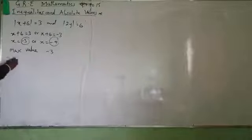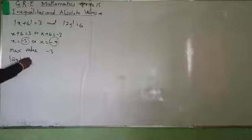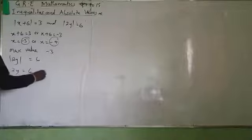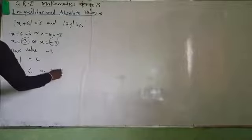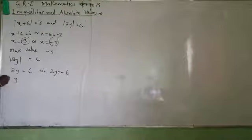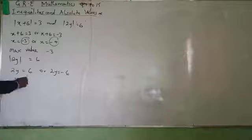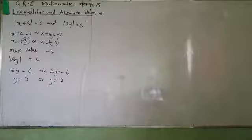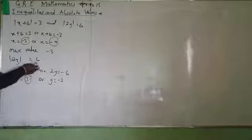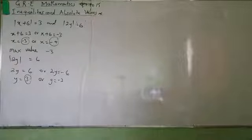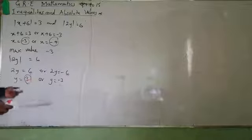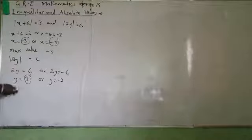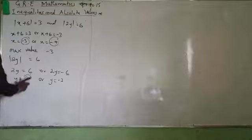For 2Y with absolute value equals 6: 2Y equals 6 or 2Y equals minus 6, giving Y equals 3 or Y equals minus 3. The maximum values are: maximum of X is minus 3, maximum of Y is plus 3. Take note of that.